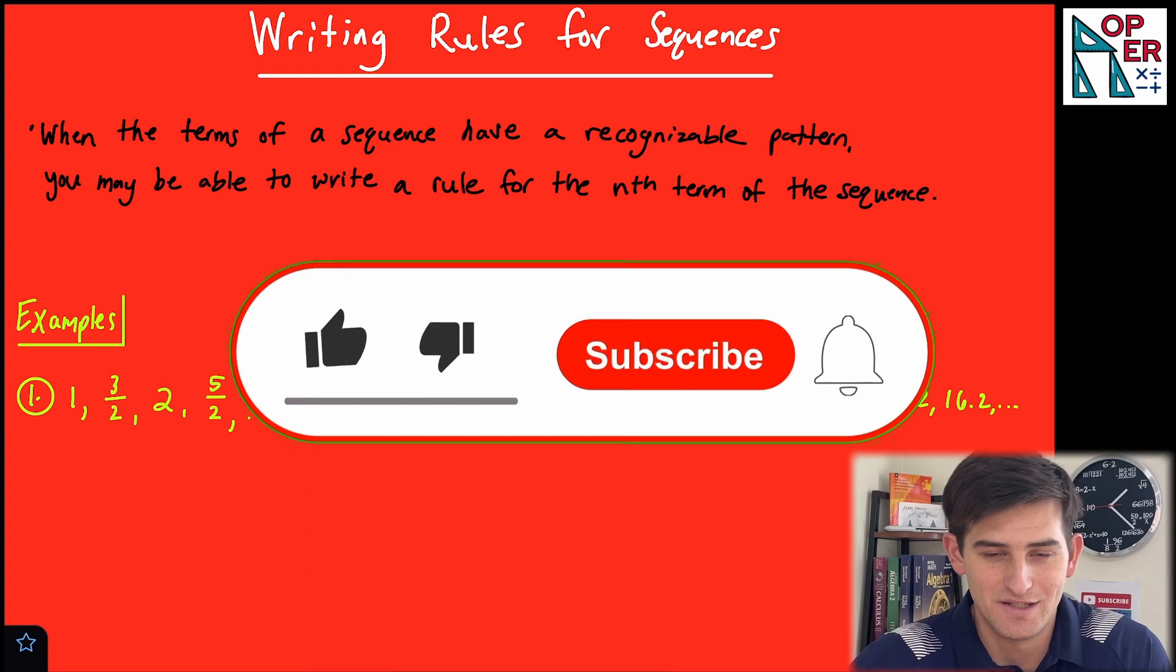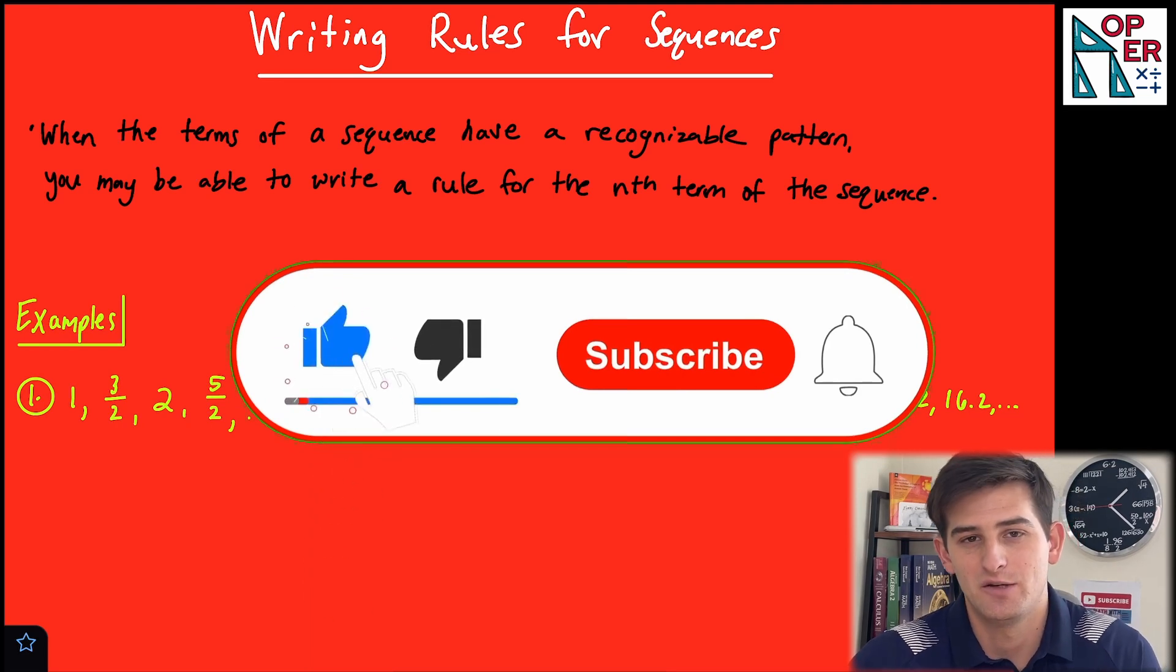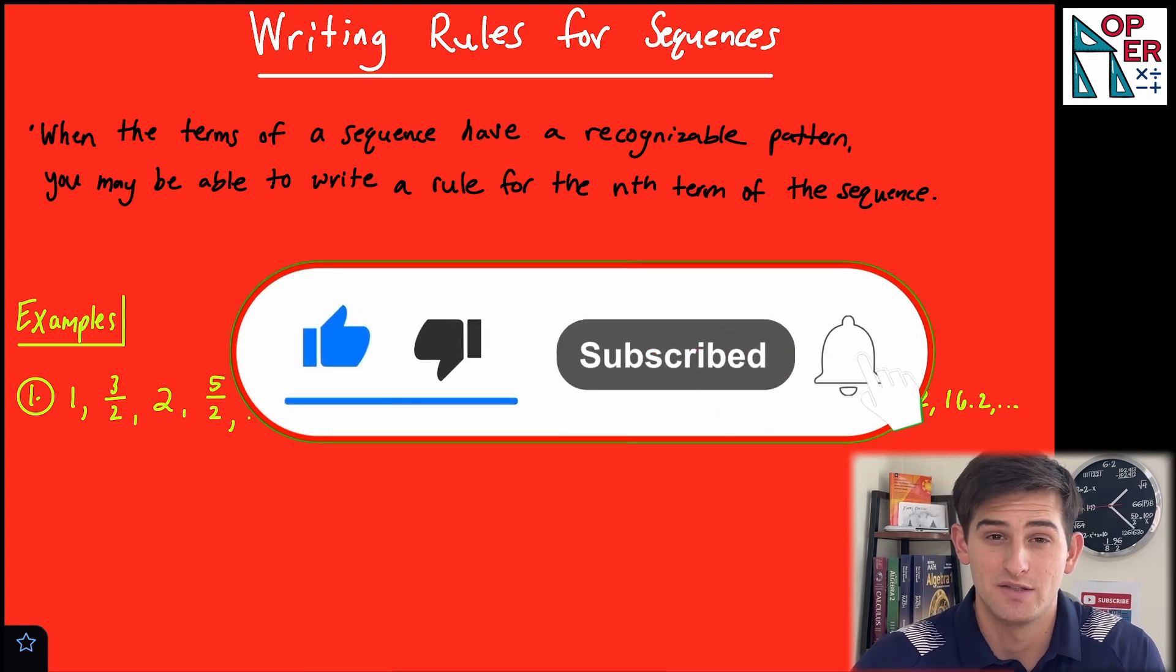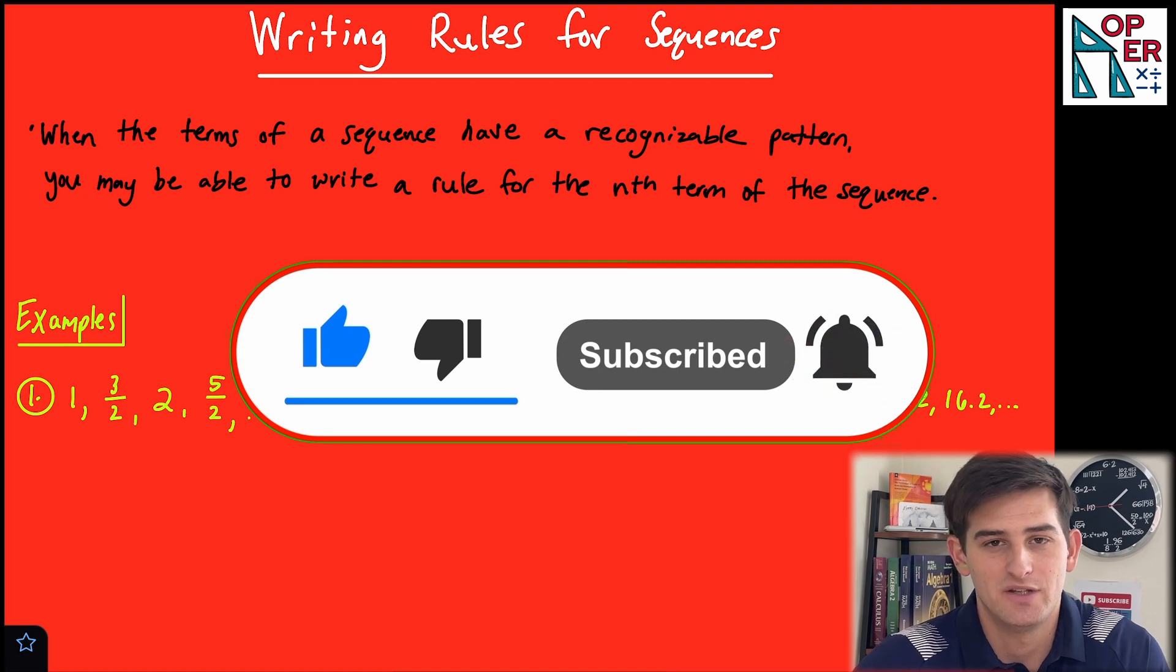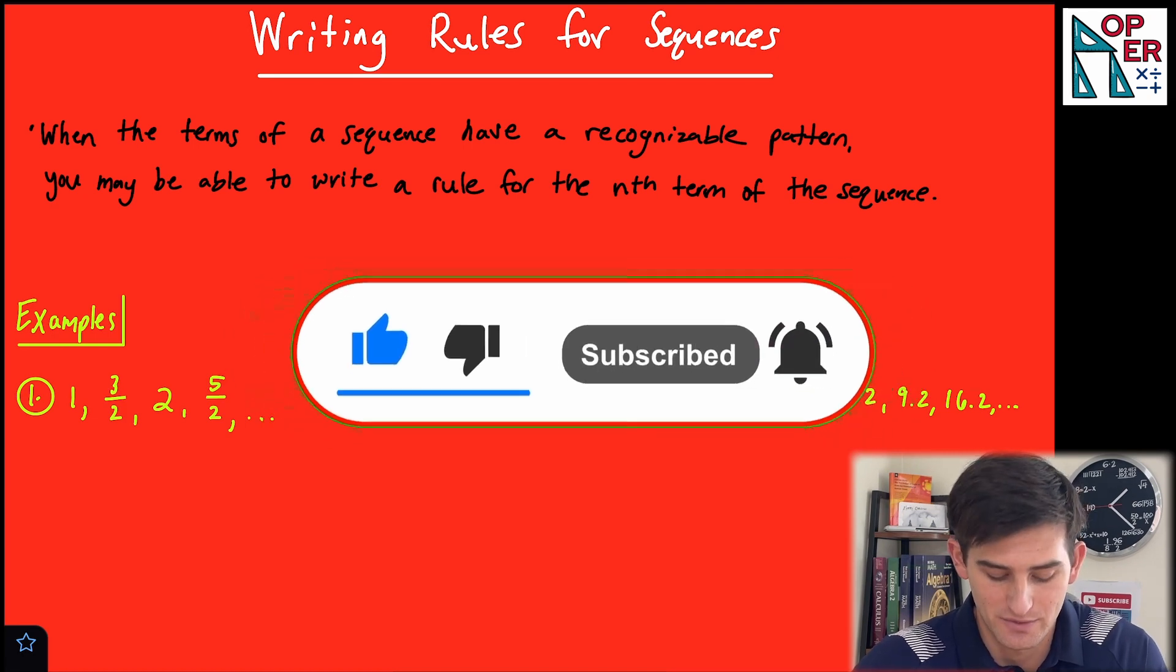Let's talk about how we can write a rule for a sequence. So in a previous video, we talked about how we can extend a sequence or write the terms of a sequence, and I'll put that video at the end of this one. So it says, when the terms of a sequence have a recognizable pattern, you may be able to write a rule for the nth term of the sequence.